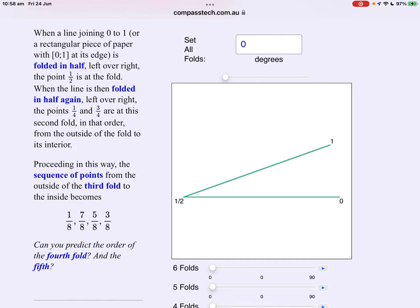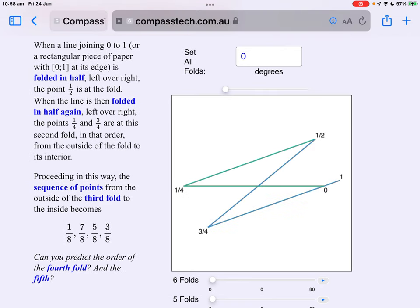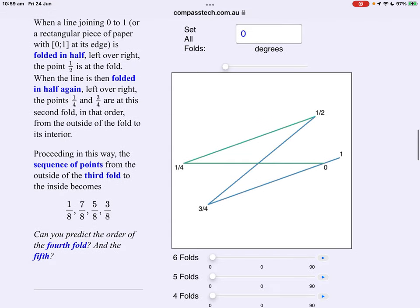But what happens when we fold a second time? Well this is worth doing a few times with a real piece of paper to start to get your head around it. Folding a second time, the zero and the one are at the bottom of the fold. Zero then one. Above them will be what was just the fold a minute ago. That's a half. And then at the actual fold itself, there are now two parts of the page. One quarter and three quarters. In that order.